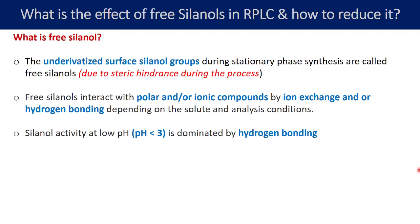Why do silanol groups not undergo ionization at lower pH? Looking at Type B silica, which is mostly used for column manufacturing today, it has a pKa value of around 5. Silanol groups are acidic in nature. Using the Henderson-Hasselbalch equation, you can calculate the percent ionization at different pH values. If pKa is 5 and pH is 5, 50% ionization takes place. The moment you adjust the mobile phase pH to pKa minus 2 — which becomes 3 or less — almost all silanol groups remain unionized.